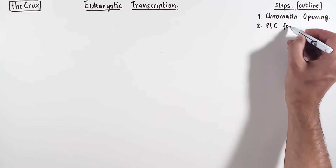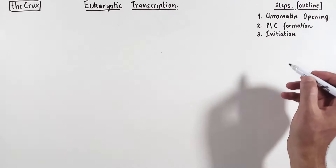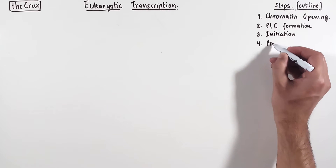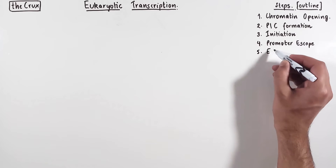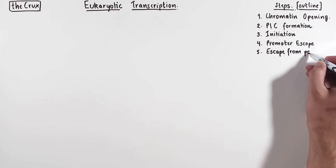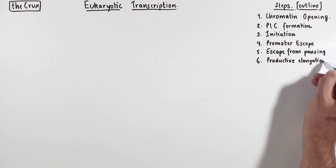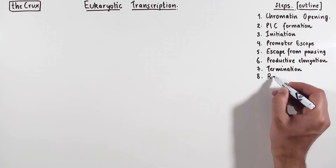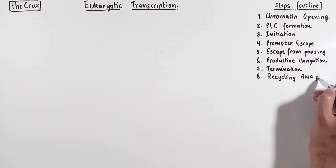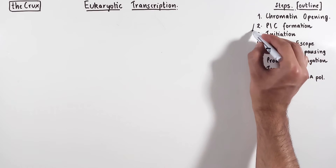This will then lead to a pre-initiation complex that results in the initiation of transcription, but at this step the RNA polymerase has a tough time escaping the promoter. We will discuss a bit about that until it finally escapes from the paused state, transitioning into productive elongation. And when there is a signal to stop, the process of transcription is terminated. And because RNA polymerase is an enzyme, and all enzymes are recycled to a certain extent, we will also see how RNA polymerase becomes available to start this process of transcription in a cycle all over again.